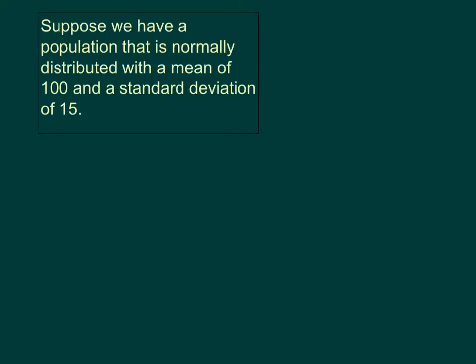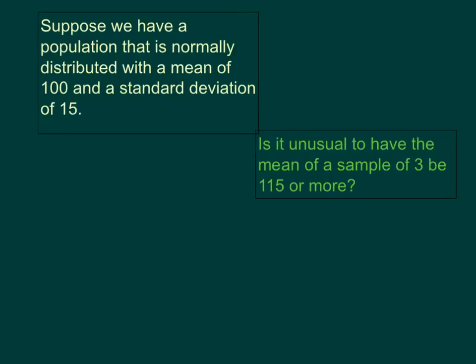Suppose we have a population that is normally distributed with a mean of 100 and a standard deviation of 15. If we took a sample of 3 individuals out of that population, would it be unusual for the mean of that sample to be 115 or more? How can we determine that?